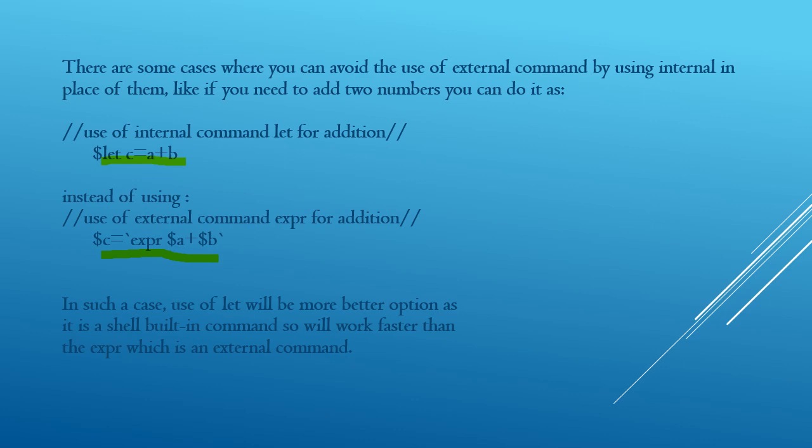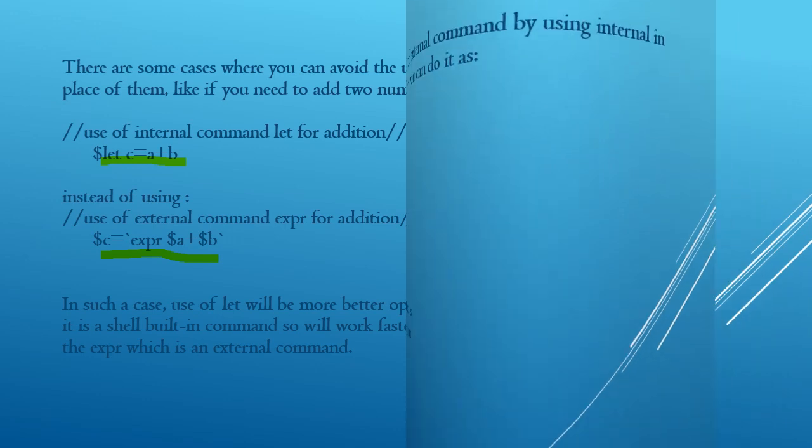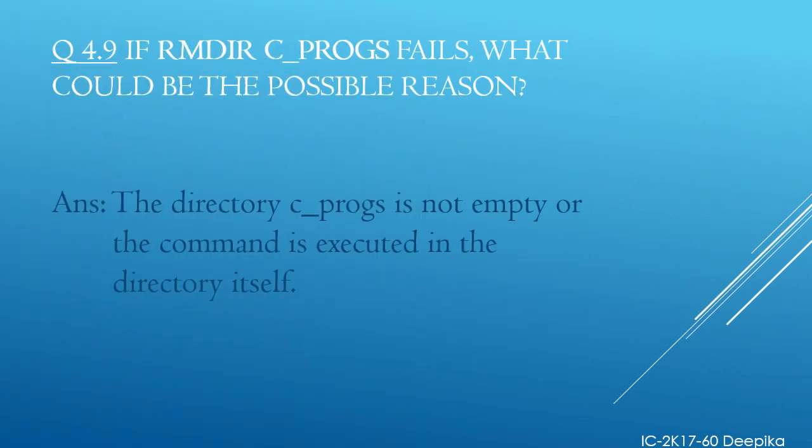This is the reason why we should prefer internal commands over external ones. Now let us see some questions based on the file system. The first question is: if rmdir cprox fails, what could be the possible reason? The answer is that the directory cprox is not empty, or the command is executed within the directory itself.